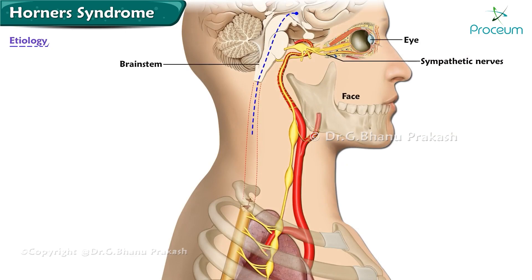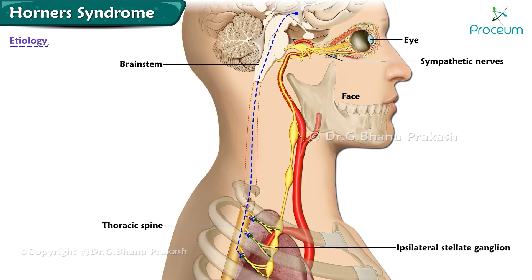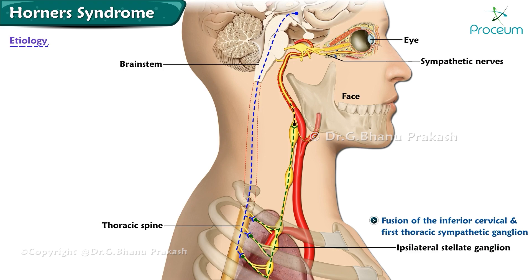The sympathetic nerves that innervate the eye and face originate in the brainstem, traverse the upper spinal cord, exit at the upper thoracic level, and then traverse the ipsilateral stellate ganglion — a fusion of the inferior cervical and first thoracic sympathetic ganglion. This is where the fibers can be compressed by an apical lung tumor. From there, they ascend to the face and eye.